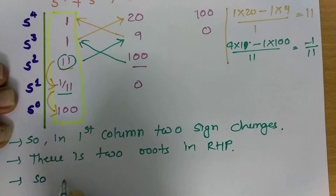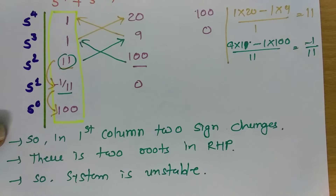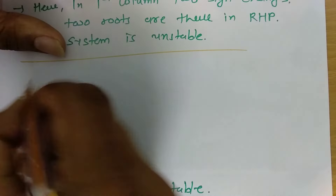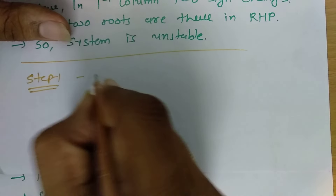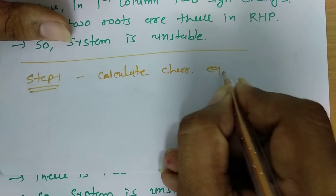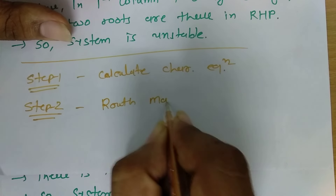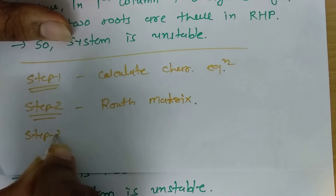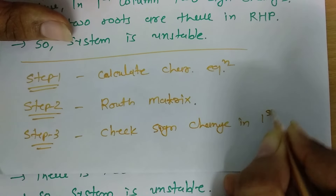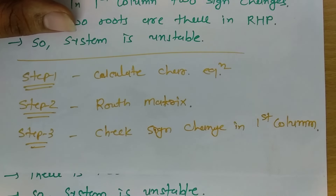Therefore, the system is unstable. When calculating Routh-Hurwitz criteria, we need to follow three steps: Step one — calculate the characteristic equation. Step two — create the Routh matrix. Step three — check sign changes in the first column. These are the three steps that explain stability using Routh criteria.